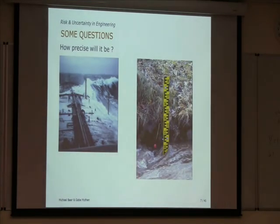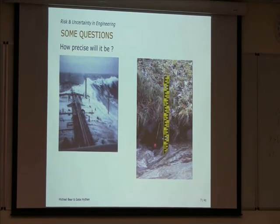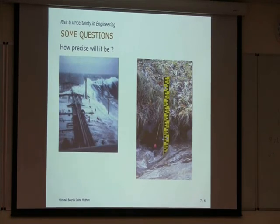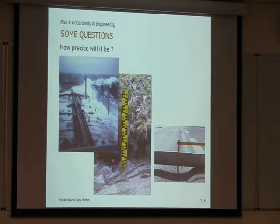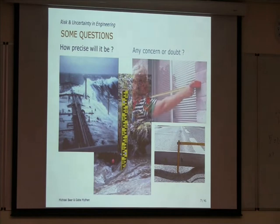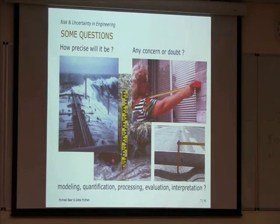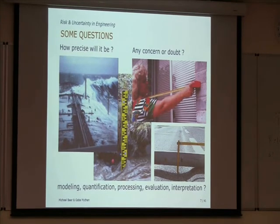Another example is the typical engineering measurement of a water dam — is it a number, a distribution function, or just a range between A and B? When we measure the depth of dips in the street, there are different uncertainties in positioning. If I place a measuring device in a slightly inclined way, I get a different measurement. If I send five people there, I get five different results. Is this uncertainty something I can model probabilistically? What engineers need is a modeling, quantification, processing, evaluation, and interpretation of this kind of imprecision in numerical analysis.